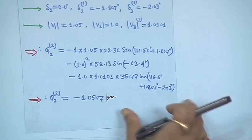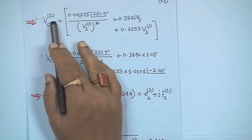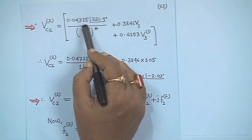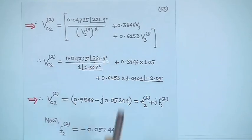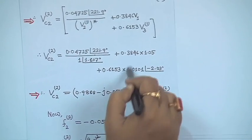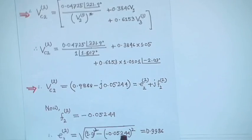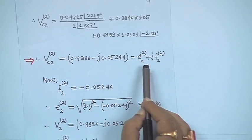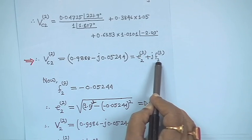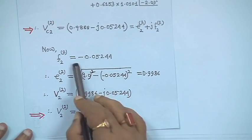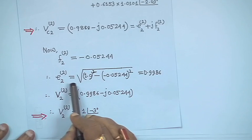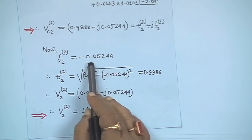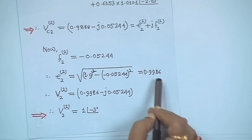With Q₂² computed, V_C2² is calculated the same way. The result is V_C2² = 0.9888 − j0.05244. Writing this as E₂² + jF₂², the imaginary part F₂² = minus 0.05244 is retained. Since |V₂| = 1 is fixed, E₂² = sqrt(1.0² − (0.05244)²) = 0.9986. Therefore V₂² = 0.9986 − j0.05244, giving magnitude 1 at angle minus 3 degrees.